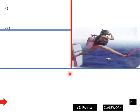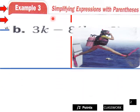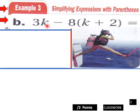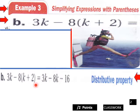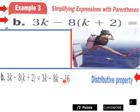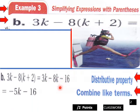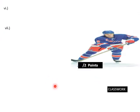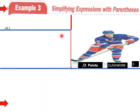Let's try another one using our distributive property skill: simplifying an expression with parentheses. We have 3k minus 8 times the quantity k plus 2. Using the distributive property, we end up with 3k minus 8k minus 16. Negative 8 times k is negative 8k, and negative 8 times positive 2 is negative 16, giving us 3k minus 8k minus 16.